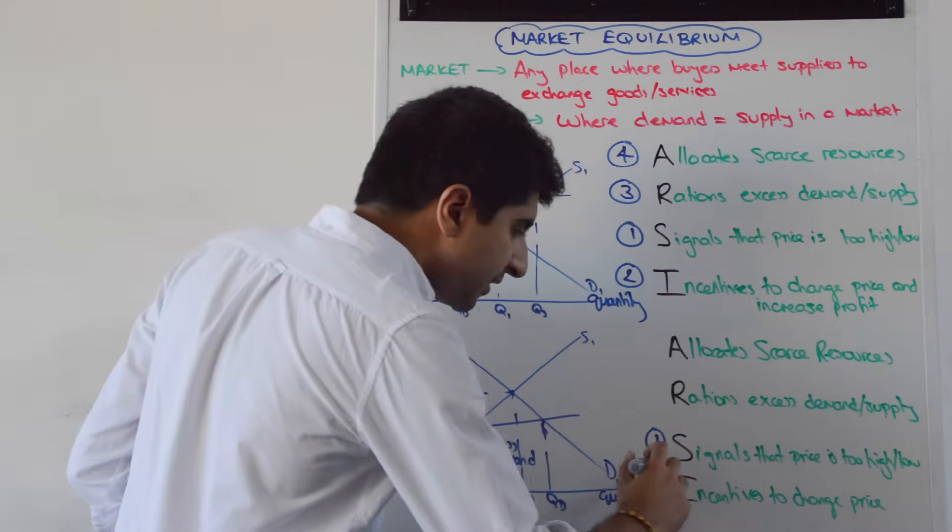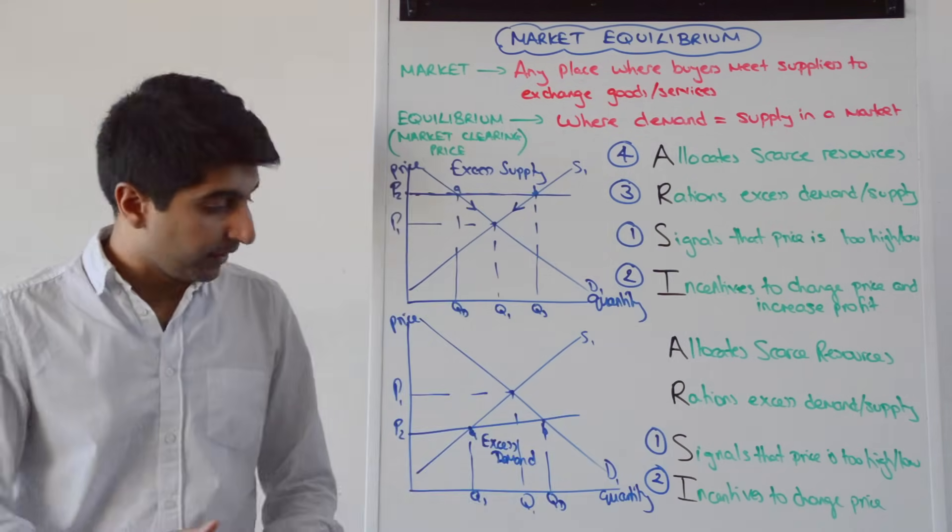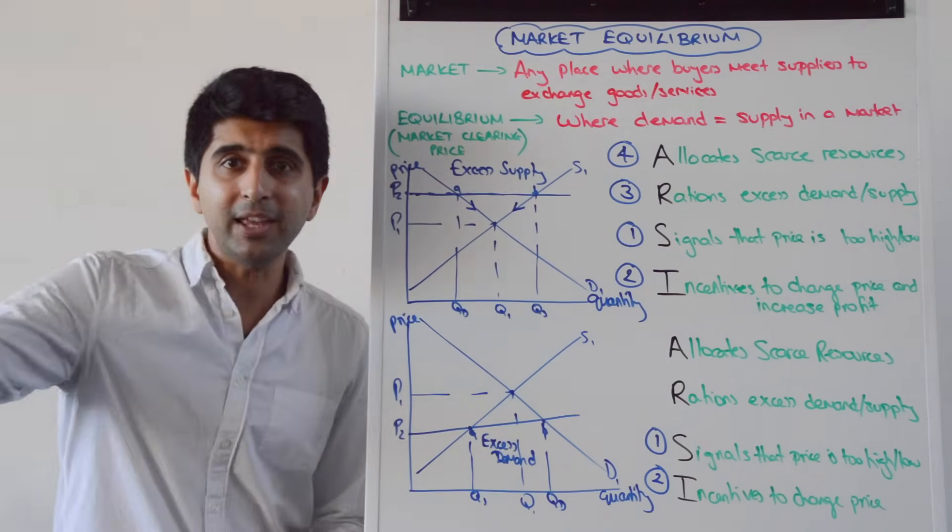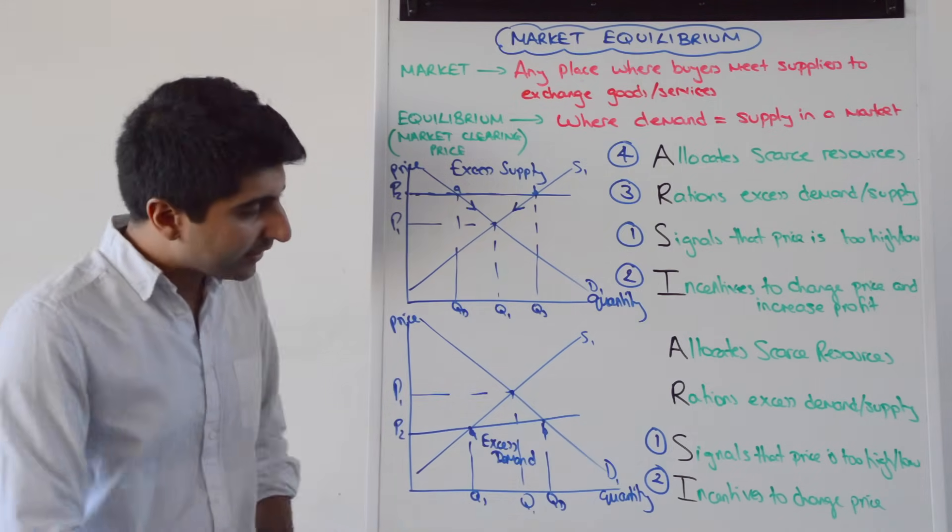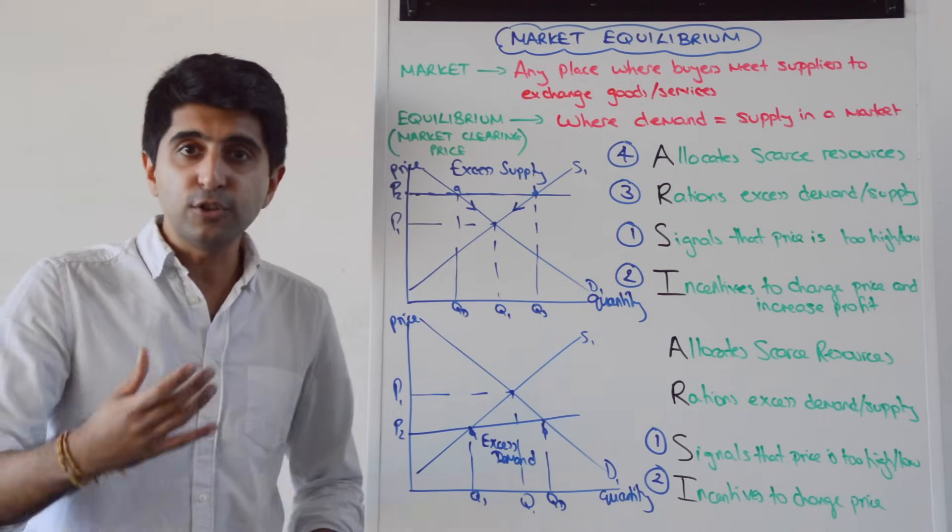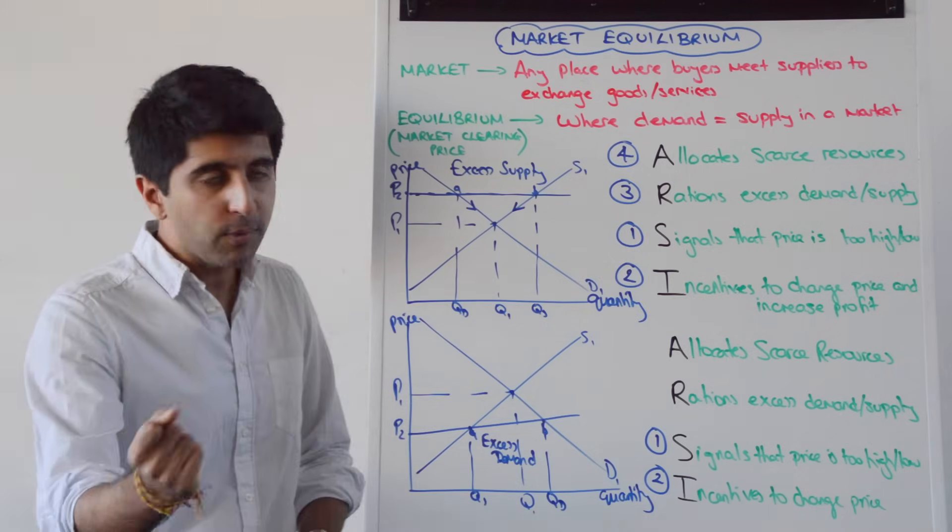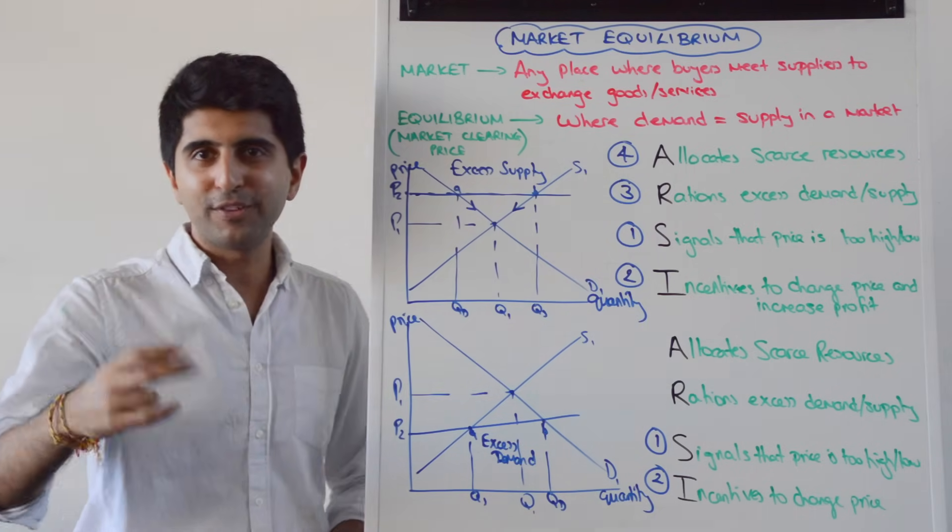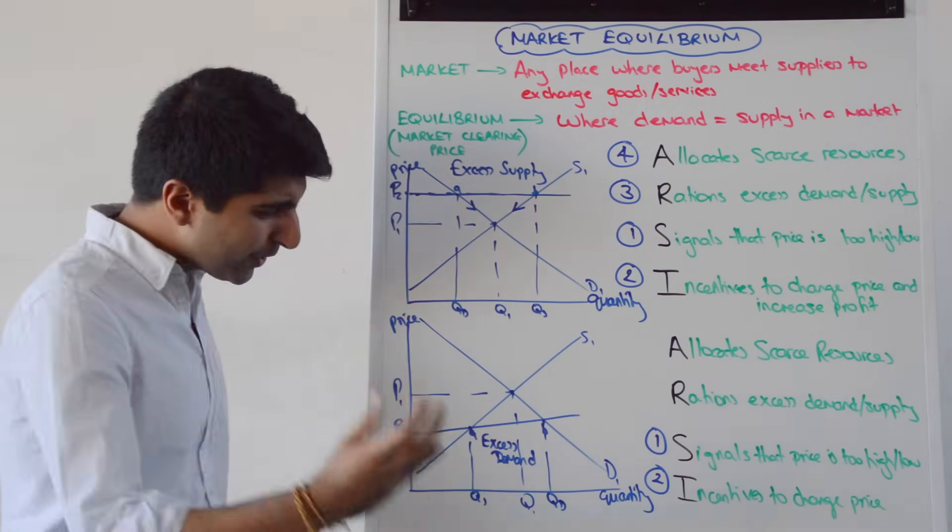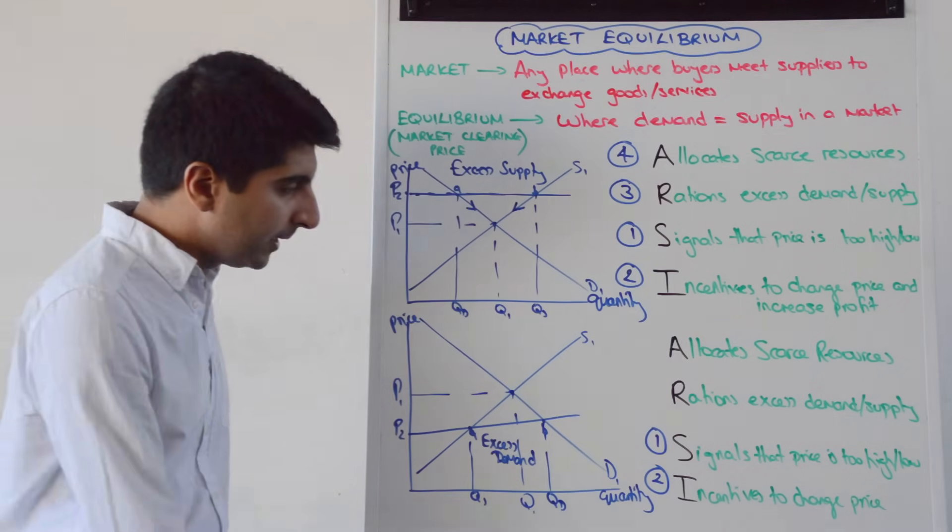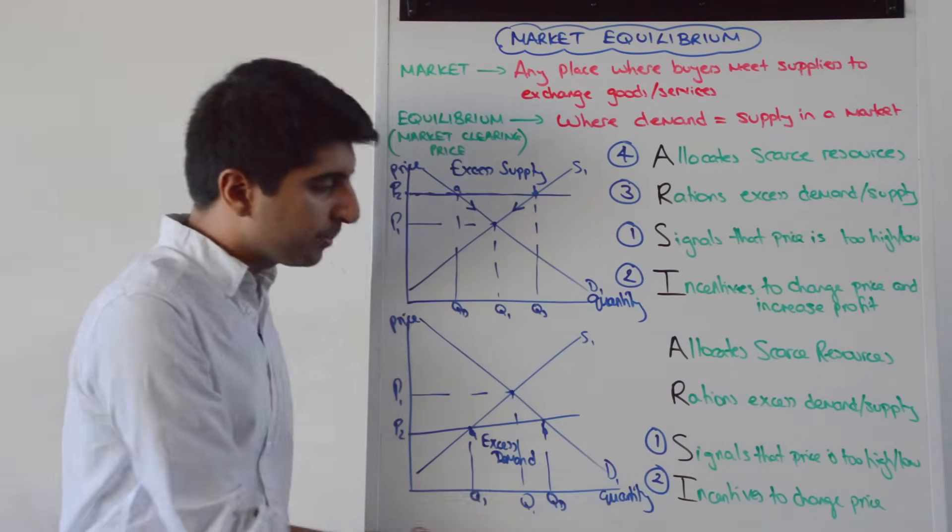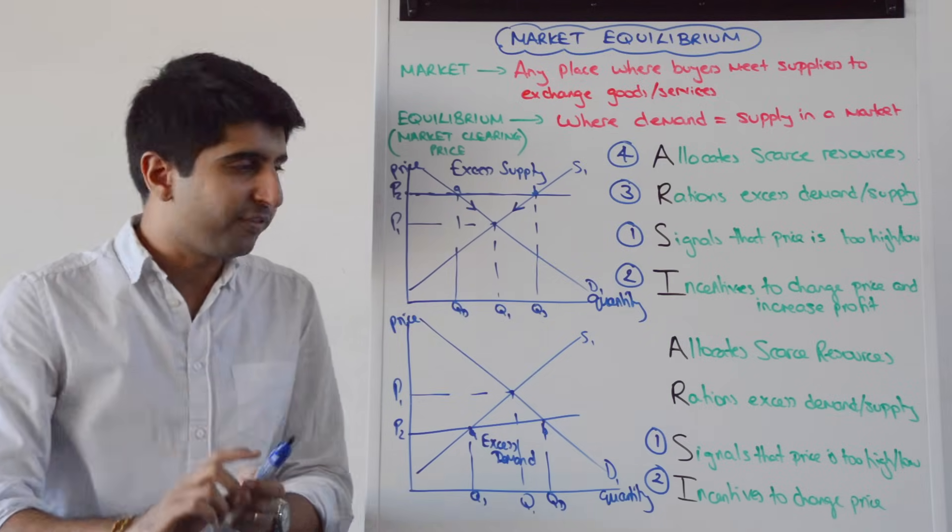So then there is an incentive for producers now to increase their price from P2 to P1. Milk it. If you've got huge demand for your product, milk it. Raise your price. Satisfy some of that extra demand by producing more at a much higher price. Great way to increase your profits. You've got huge demand, push up your price. Make a higher profit from that extra demand. So there is an incentive to increase price here in order to increase profit for the producer.